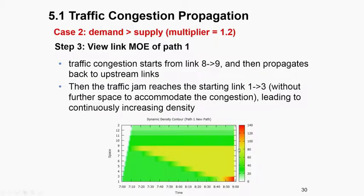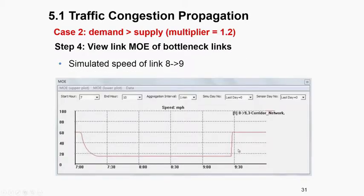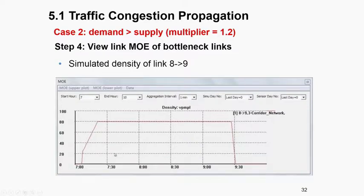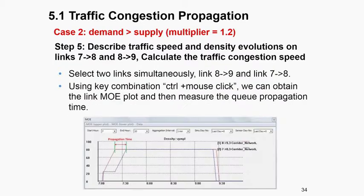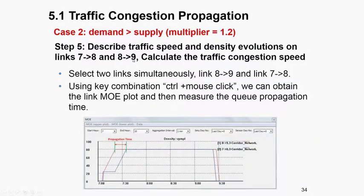Let's go to the demand file list and change the demand multiplier from 1.0 to 1.2. We still run the simulation for only one iteration, forcing all traffic through the shortest path by distance. You will see the corresponding link MOE and traffic propagation in terms of density. Then you will see the link MOE and simulated speed for link 8 to 9. After a few minutes, the traffic speed will drop to a certain level, and the density will increase from 30 to 80. You can then calculate the traffic congestion propagation speed.